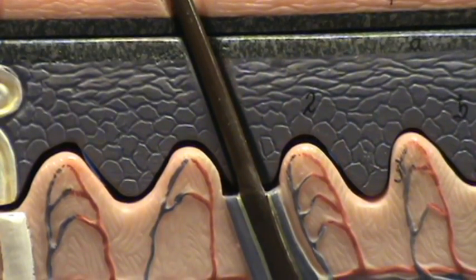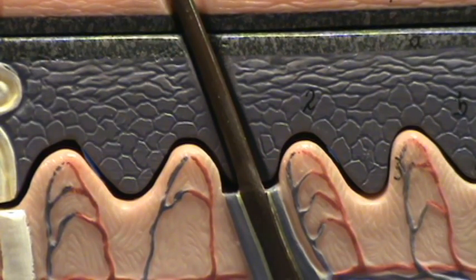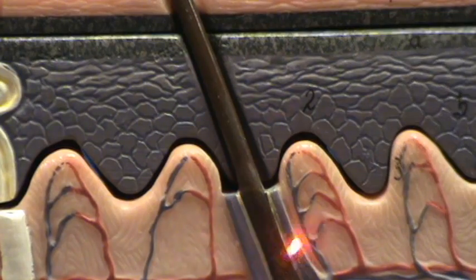Although this model doesn't show it, the external root sheath is actually a continuation of the epidermis.